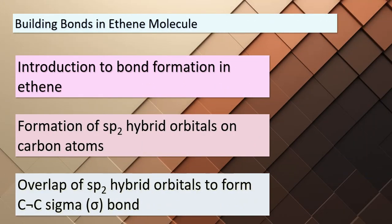Today we're delving into the intriguing world of bond formation in molecules. Our focus is on the ethene molecule, where we'll walk through the steps of constructing its bonds, specifically exploring how sp² hybrid orbitals come into play. In ethene, each carbon atom has three sp² hybrid orbitals, each containing one electron. The interaction between the sp² hybrid orbitals from each carbon atom forms what we call a C–C sigma bond, and it requires the utilization of two electrons.